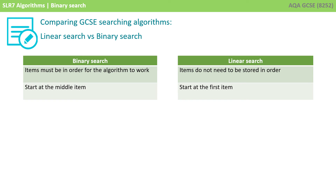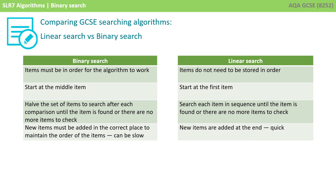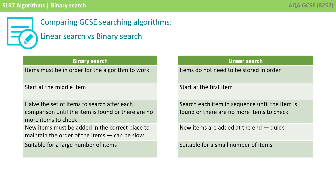With a binary search, we start with the middle item, whereas with a linear search, we start with the first item. With a binary search, we half the set of items to search after each comparison until the item is found or there are no more items to check, whereas with a linear search, we search each item in sequence. With a binary search, new items must be added in the correct position to maintain order, which can be slow. With a linear search, new items can simply be added to the end, which is quick. However, binary searches are much faster for large sets of data because with every comparison, it halves the amount of remaining items to search. Linear searches are suitable really only for a small number of items.